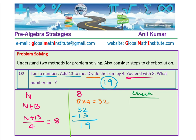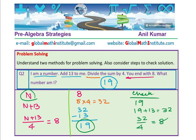Let's check. We got n as 19. I am a number 19. What is 19 plus 13? That equals 32. And when I divide 32 by 4, I do get 8. So the answer is confirmed. We again got the solution without even solving the equation.